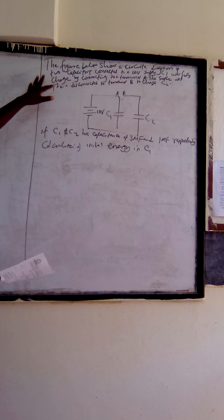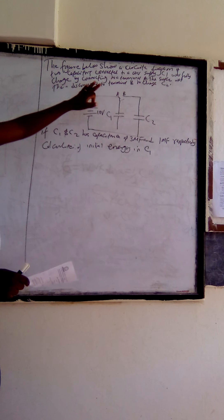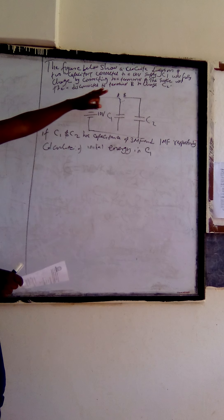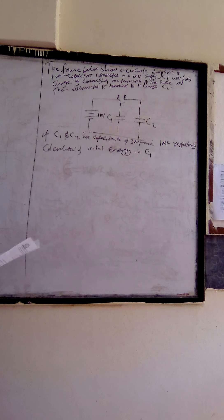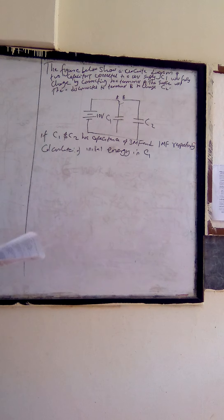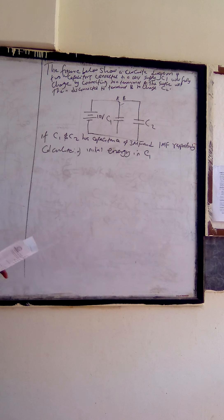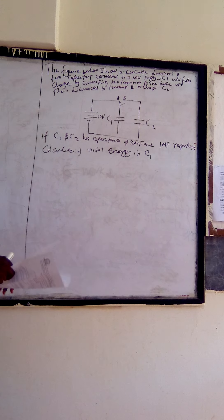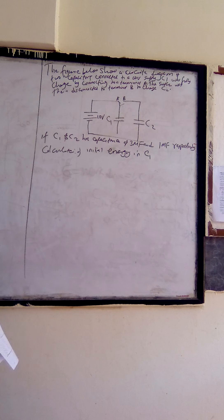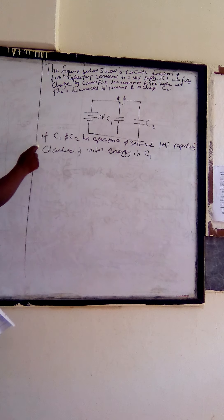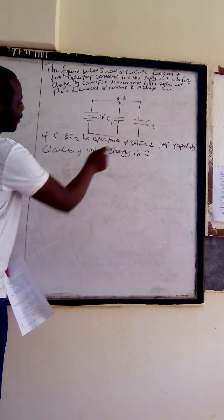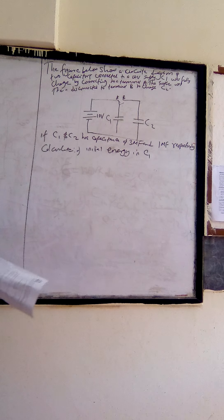The question reads that the figure below shows a circuit diagram of two capacitors connected to a 10V supply. C1, that is capacitor 1, was fully charged by connecting to terminal A. The switch was then disconnected to terminal B to charge capacitor C2.